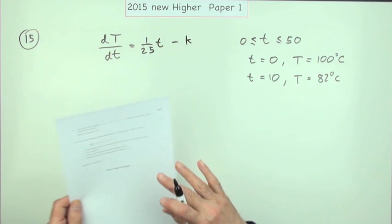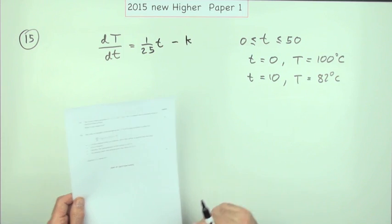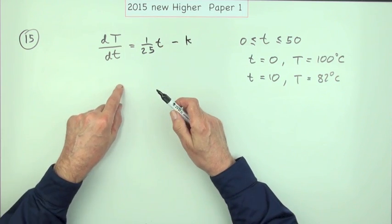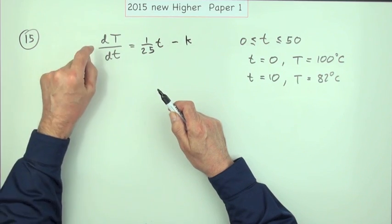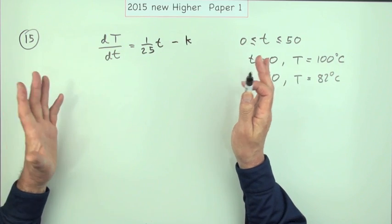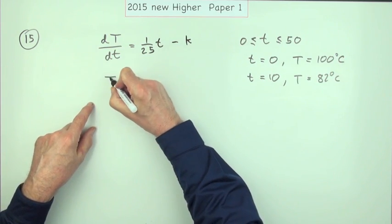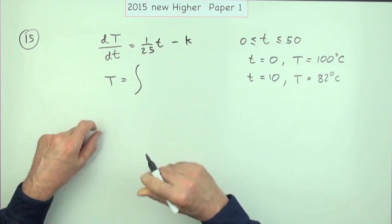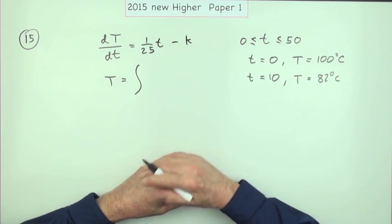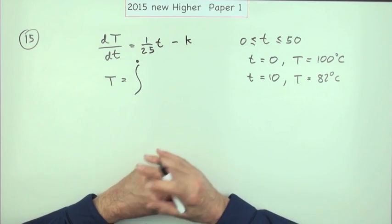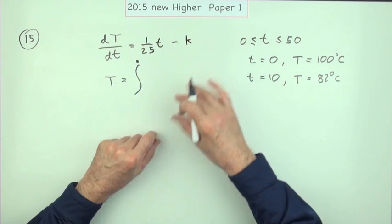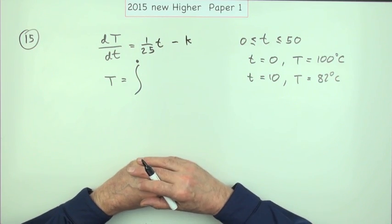The first thing then is if that's the derivative, you'll have to undo the derivative - you have to integrate. The first mark is just for knowing to integrate. As soon as you write T equals the integral of that, that would be the first mark.